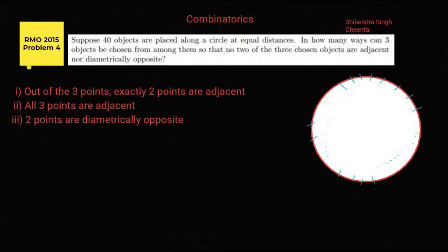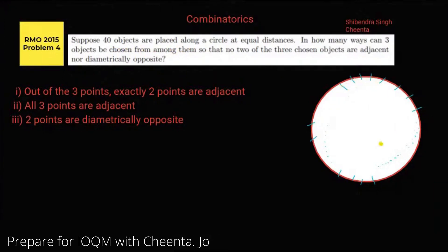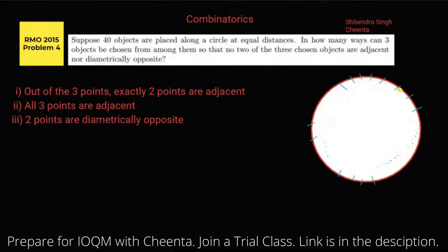Hello, today I'm going to discuss a question from RMO 2015. The question is from combinatorics. It is given that there are 40 objects placed along a circle at equal distances. We need to find in how many ways three objects can be chosen from among them so that no two of the three chosen objects are adjacent.